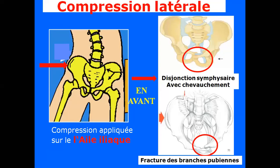Autre mécanisme : les compressions latérales. Le même ouvrier écrasé, mais cette fois la force est appliquée latéralement sur la crête iliaque. On aura des lésions en avant : soit une disjonction symphysaire avec chevauchement, soit une fracture des branches pudiennes — les deux hémi-bassins auront tendance à se chevaucher, l'un montant sur l'autre, contrairement à la compression antéropostérieure.